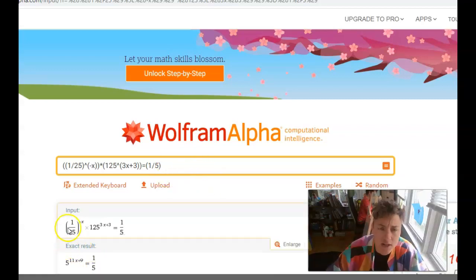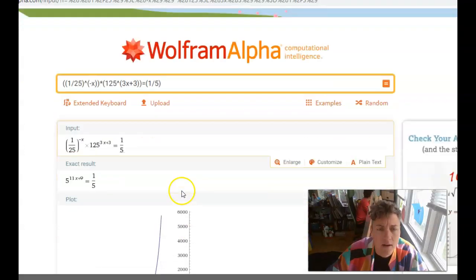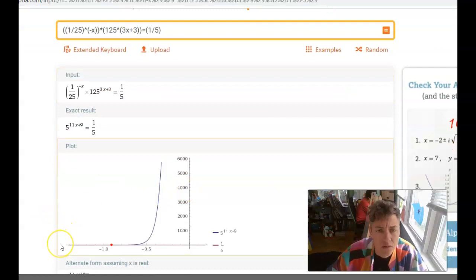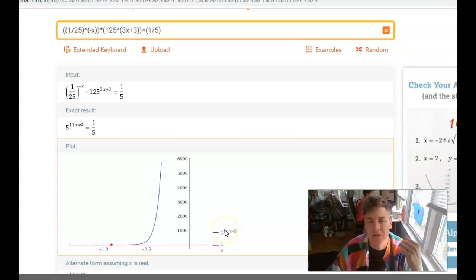Alright. So, we double check that our input actually looks like what we wanted it to. 1/25 to the negative x times 125 to the 3x plus 3. Yeah, good. We're good. Cool. That's what the graphical representation of 5 to the 11x plus 9, right? That ended up being our left side of the equation, and that's our 1/5. We're seeing where those two intersect.